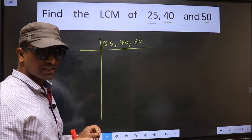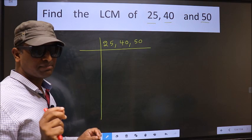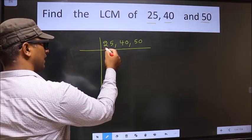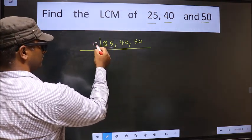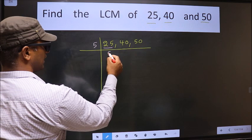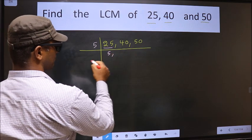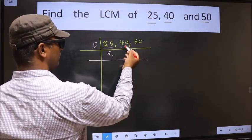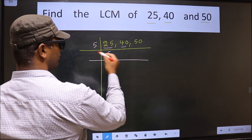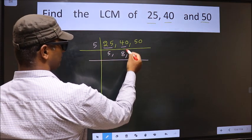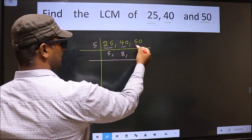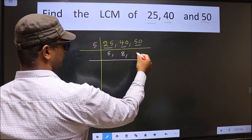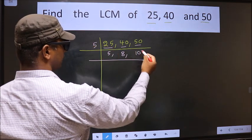Now, we should focus on the first number, that is 25. 25 is 5 times 5. The other number 40 — when do we get 40 in the 5 table? 5 times 8 is 40. The other number 50 — when do we get 50 in the 5 table? 5 times 10 is 50.